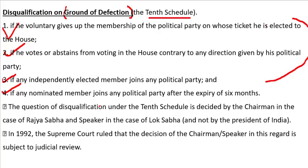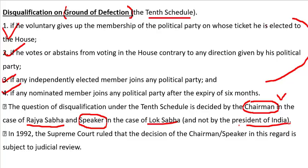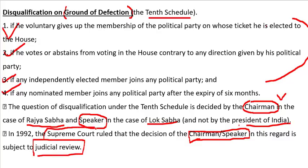The question of disqualification under the 10th Schedule is decided by the Chairman in the case of Rajya Sabha, and by the Speaker of Lok Sabha in the case of Lok Sabha — not by the President. In 1992, the Supreme Court held that the decisions of the Chairman and Speaker on anti-defection matters can be subjected to judicial review by the Supreme Court.